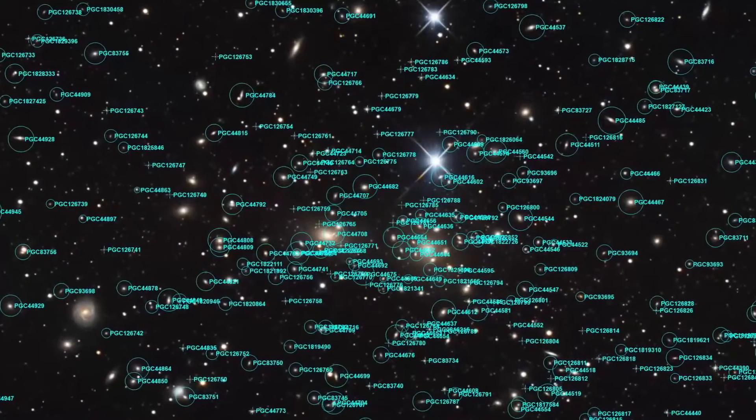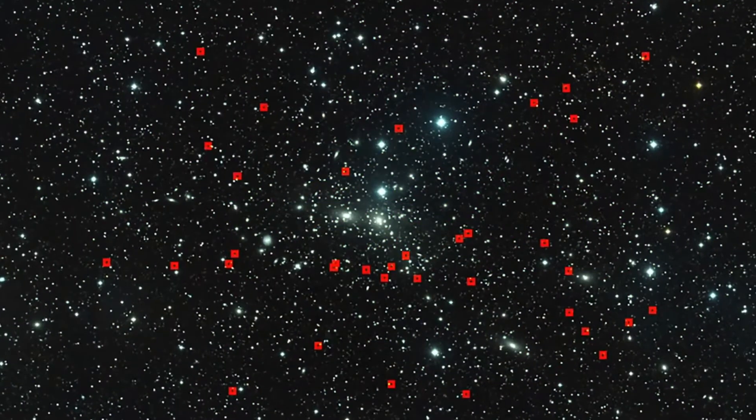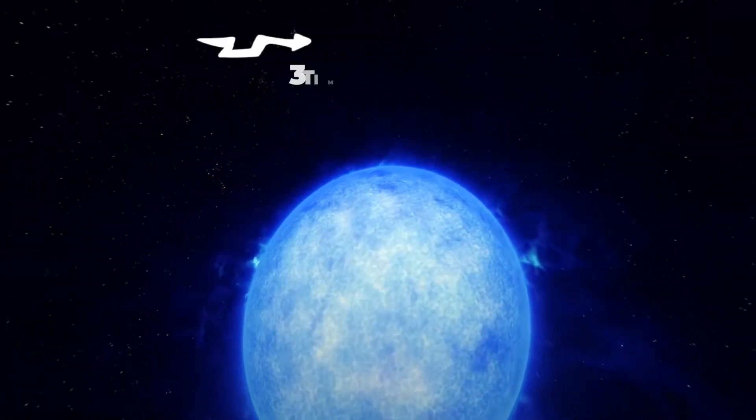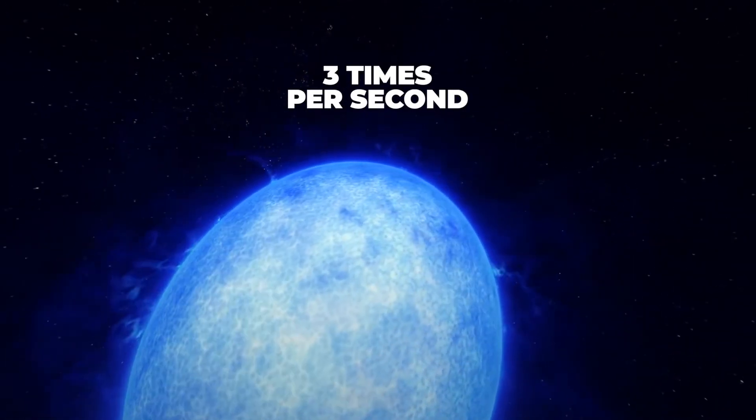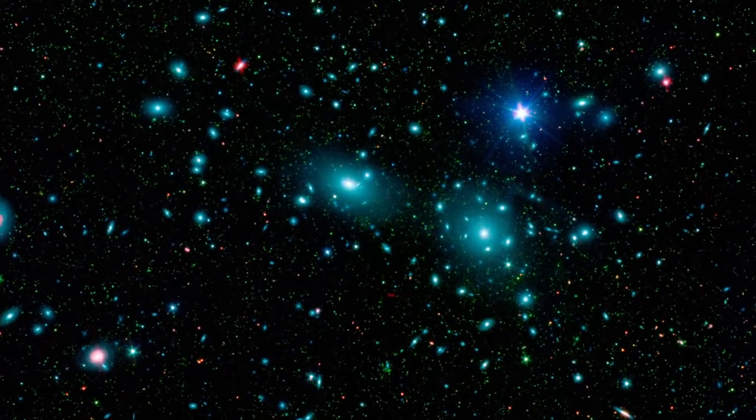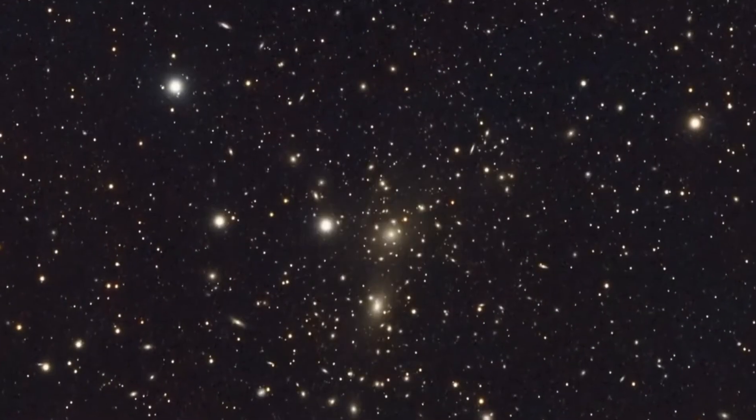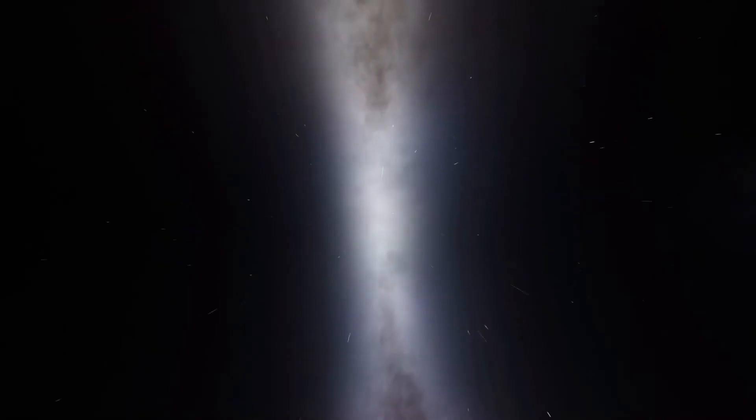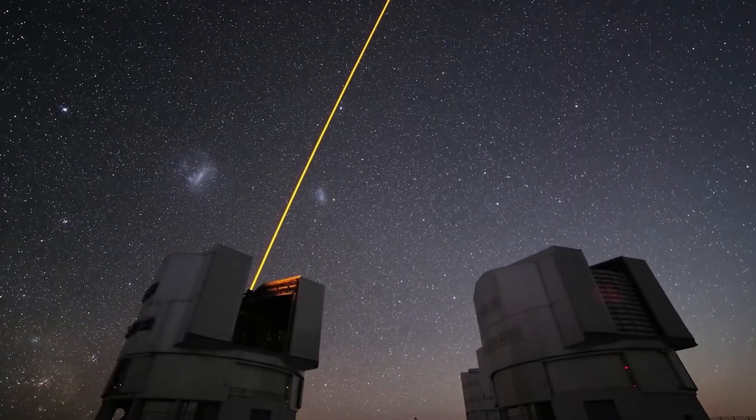This particular pulsar is rotating at the rate of three times per second, which makes it relatively slow compared to some of its counterparts. But there is no doubt that this is by far the brightest pulsar ever discovered and happens to be our galactic neighbor.